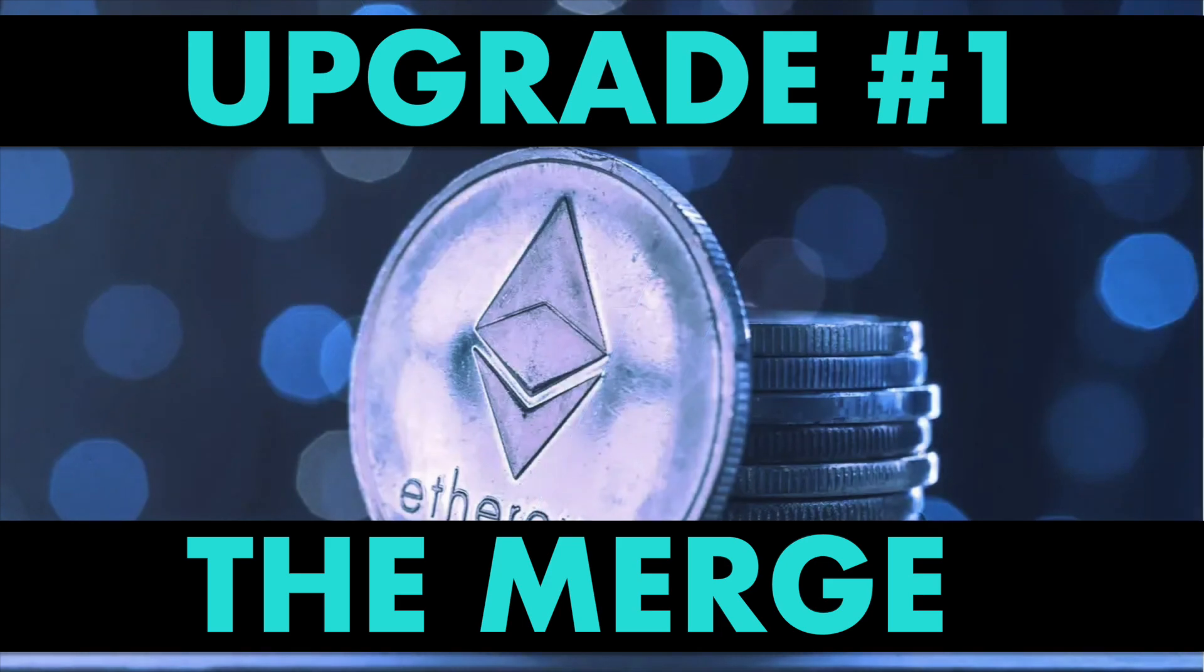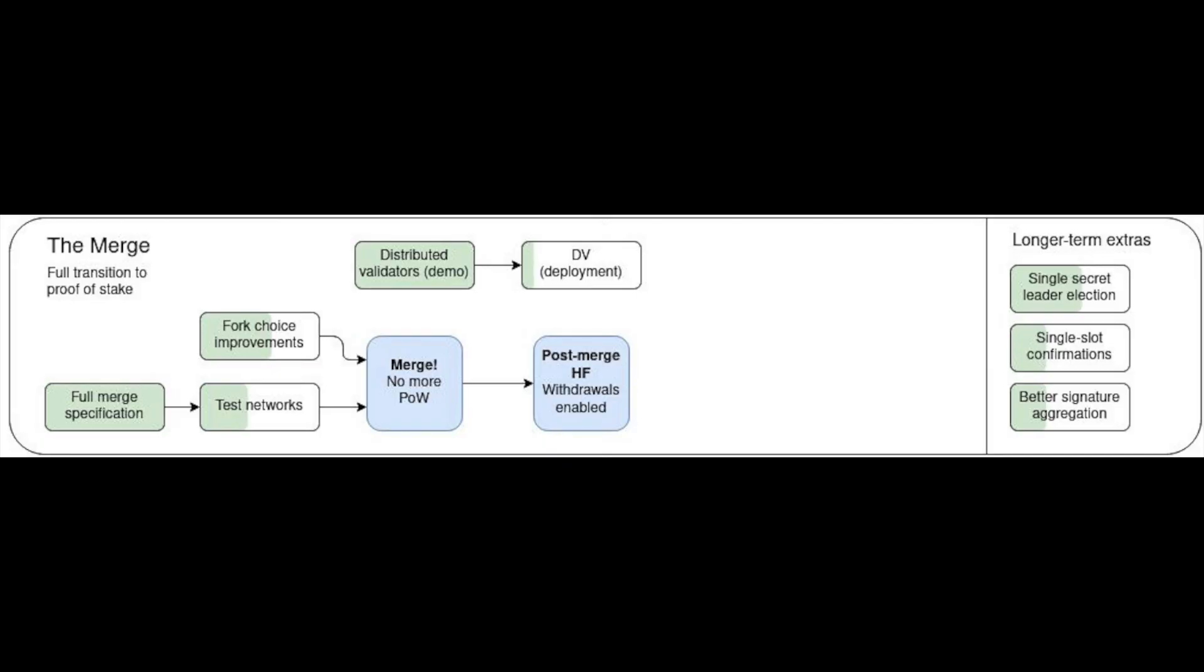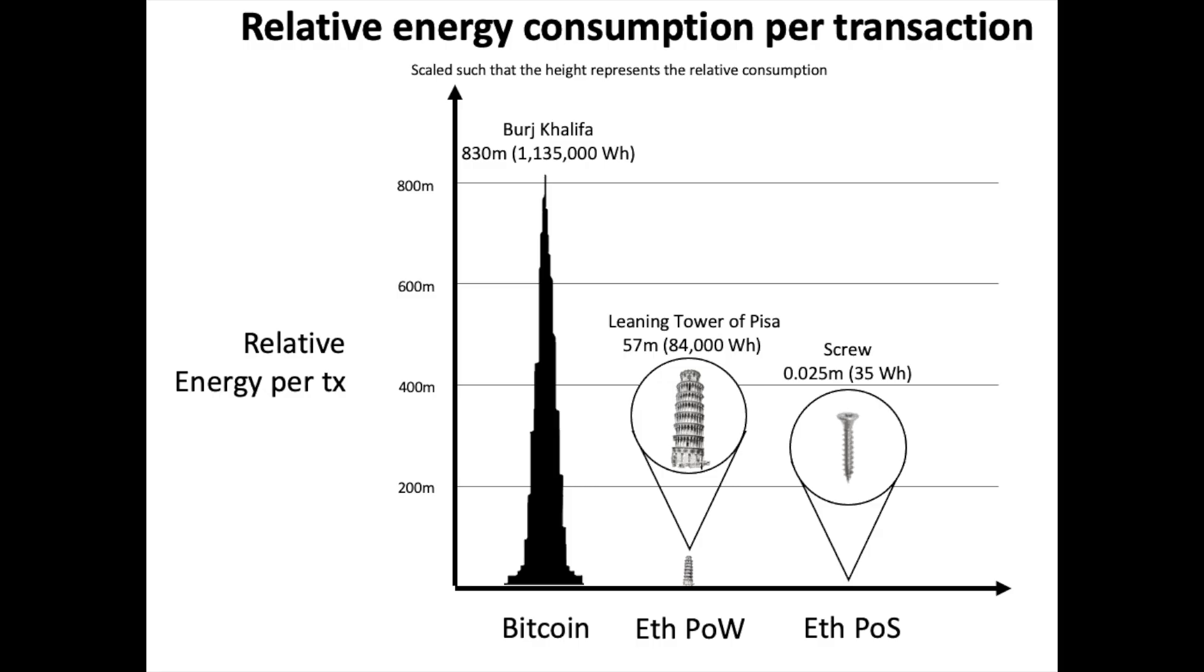The upgrade that will be done the soonest is the Merge. I know this because almost all of the testnets have already completed the Merge successfully, which is great news. This is where Ethereum ditches the proof-of-work consensus mechanism and merges into the proof-of-stake mechanism. There is a misconception that the proof-of-stake will bring lower gas fees or increase its bandwidth. This is not the case. However, switching to proof-of-stake will reduce Ethereum's energy consumption by more than 99% due to taking away all of the mining from proof-of-work.